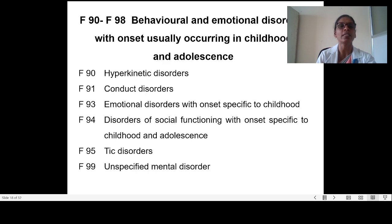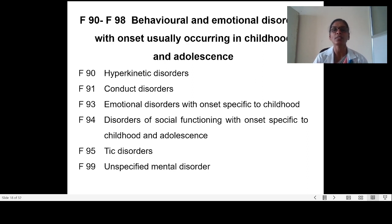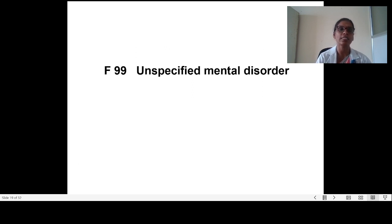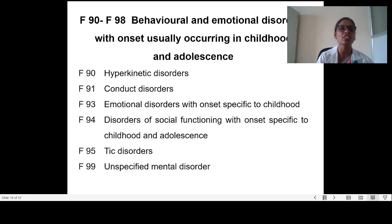F90 to F98 covers behavioral and emotional disorders with onset usually occurring in childhood and adolescence. F90 is hyperkinetic disorders, F91 is conduct disorders, F93 is emotional disorders with onset specific to childhood, F94 is disorders of social functioning with onset specific to childhood and adolescence, F95 is tic disorders, and F99 is unspecified mental disorder.